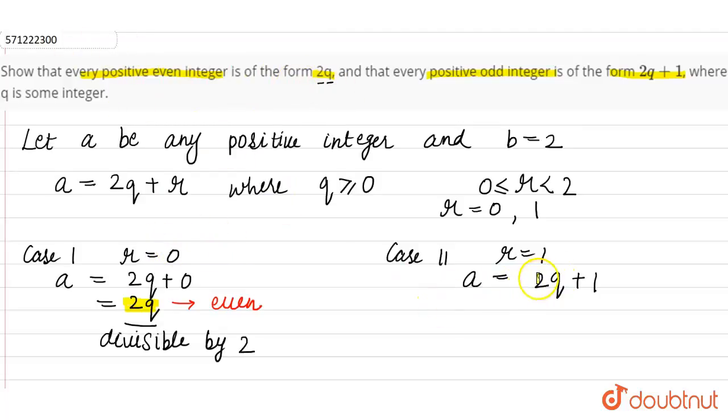Now the second case, if you see, this is even, and even plus 1 is odd. So this is odd. Therefore, every positive odd integer is of the form 2Q plus 1.